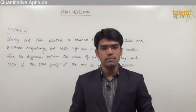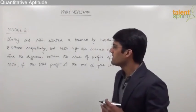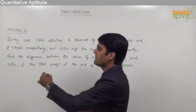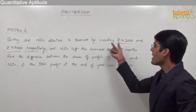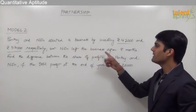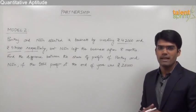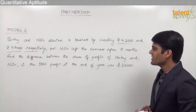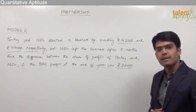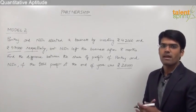Let us now take the second model from partnership where we are supposed to find out the difference between the share of profits of the two partners. Pankaj and Nitin started a business by investing rupees 42,000 and 57,000 respectively. Nitin left the business after 8 months. Find the difference between the share of profits of Pankaj and Nitin if the total profit at the end of the year was 26,000.